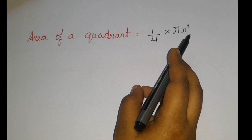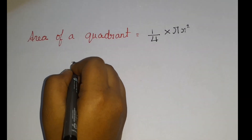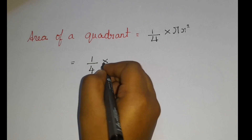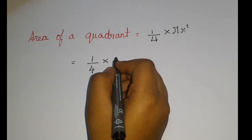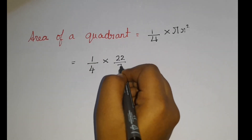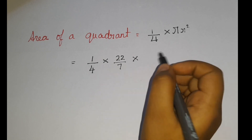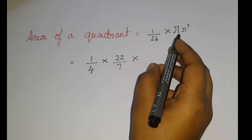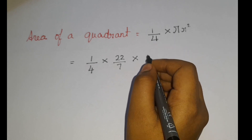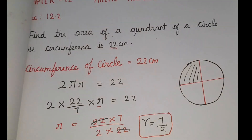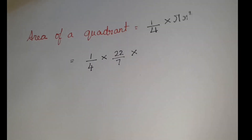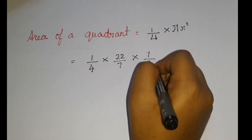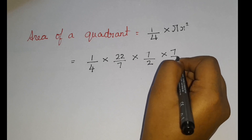So 1/4 × πr², and then = 1/4, pi value is 22/7, into r squared. r is the radius, which we found to be 7/2. So let us write 7/2 × 7/2.